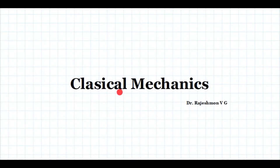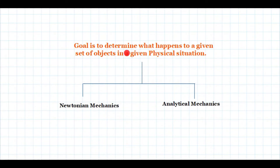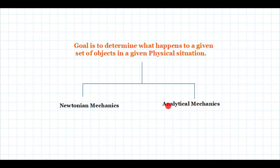Good morning all. This is the first lecture of a lecture series in classical mechanics and there will be a total of 12 lectures in this series. This series is mainly intended for undergraduate students. The general goal of classical mechanics is to determine what happens to a given set of objects in a given physical situation. There are two main ways: applying Newton's laws, known as Newtonian mechanics, and applying Lagrange's equations, known as analytical mechanics. In this series I will be mainly focusing on analytical mechanics.